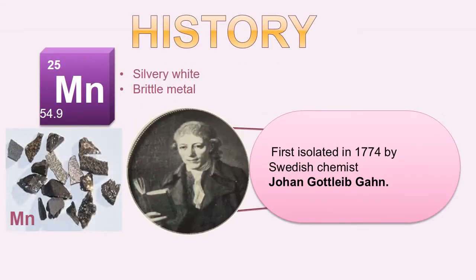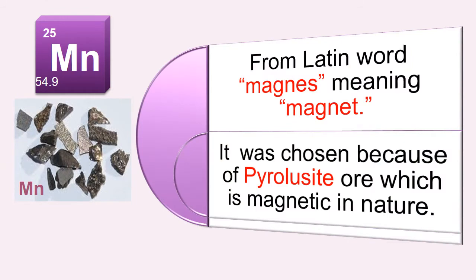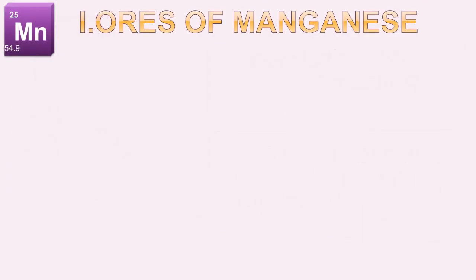History of manganese: Silvery-white brittle metal manganese was first isolated in 1774 by Swedish chemist John Gottlieb Gahn. Manganese is named from the Latin word 'manganes' meaning magnet, because its pyrolusite ore is magnetic in nature.